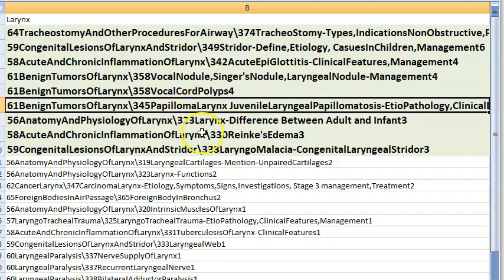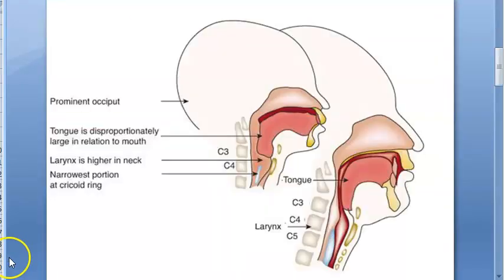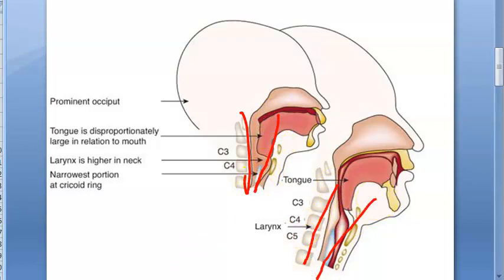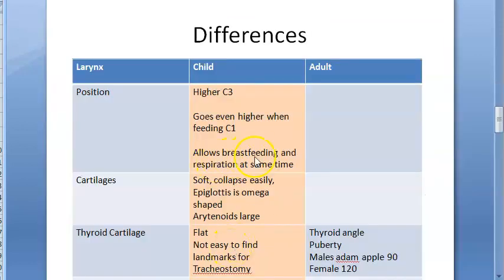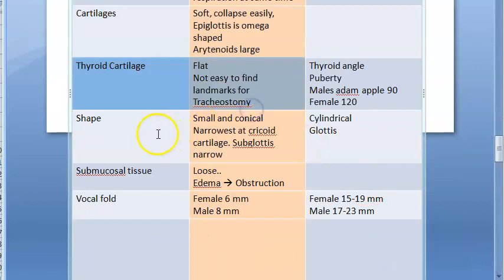Differences between adult and infant larynx: the child's larynx is higher up, the tongue is large relative to the mouth, the narrowest part is the cricoid cartilage, and it is funnel-shaped in a child versus cylindrical in adults. Cartilages are very soft in a child, the epiglottis is omega-shaped and can collapse causing laryngomalacia, the thyroid cartilage is flat, and vocal folds are shorter.